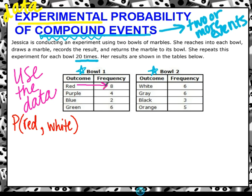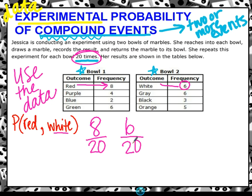It is experimental, which means we're looking at what did happen. So red was eight. They drew a red eight times out of 20 times. Remember, it told us that in the question. The second one is white, they drew a white marble six times out of 20 times. You already know how to calculate compound probability. If there's two events, that's two fractions, and you multiply them. To multiply fractions, it's top times top and bottom times bottom.